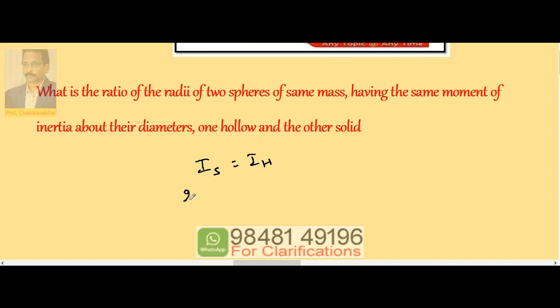So let us use solid sphere, it is two by five M R square. Hollow sphere, two by three M R square. So if I cancel both sides M, because mass is given as same, two and two gets cancelled.